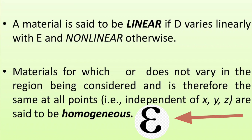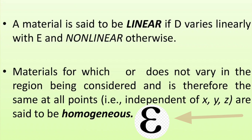A material is said to be linear if the electric flux density D varies linearly with the electric field intensity E. If D varies linearly with respect to E, such a material is called a linear material.